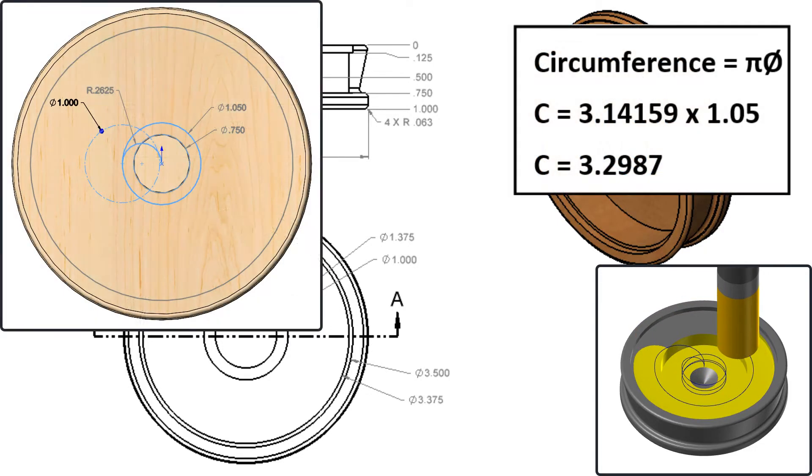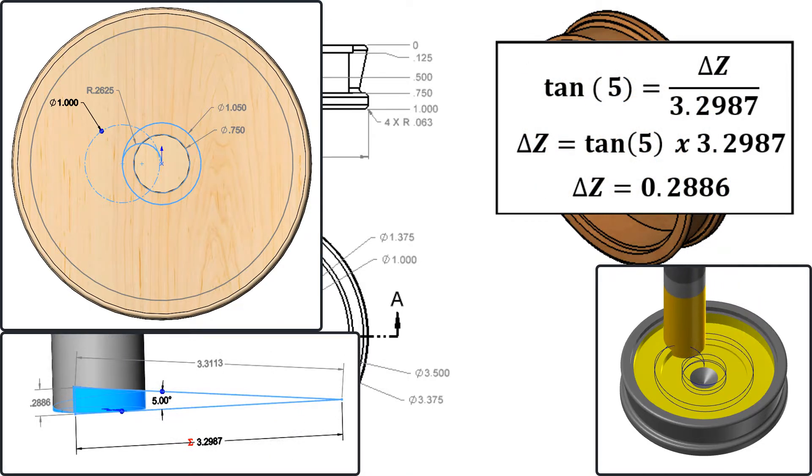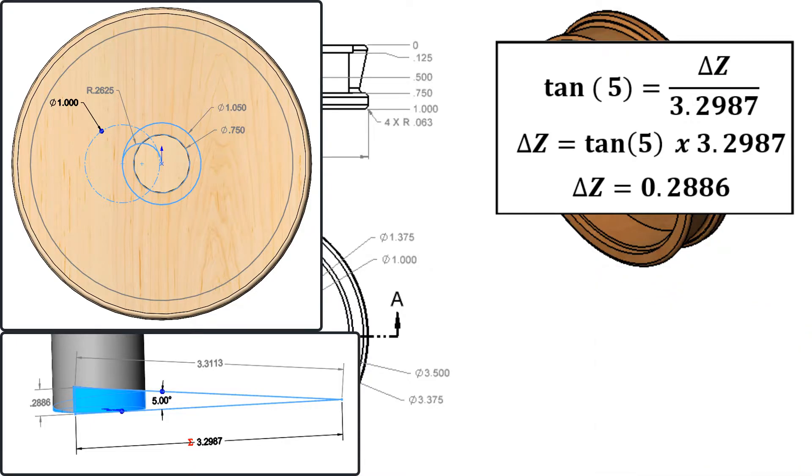First I'll calculate the circumference of the circle the center of the cutter will travel for the first rough cut. Next I'll use trigonometry to calculate the step down for a 5 degree angle, and see it will be 0.2886. This is the maximum step down.